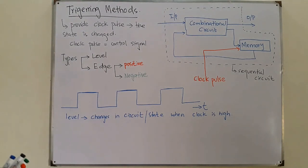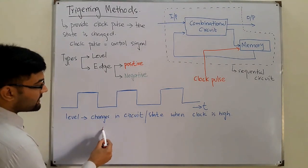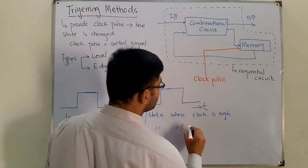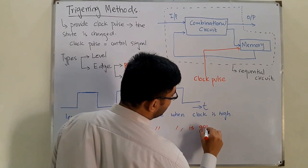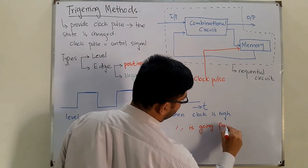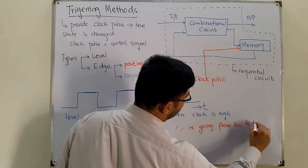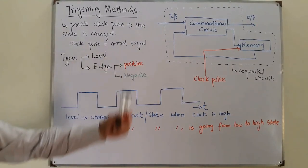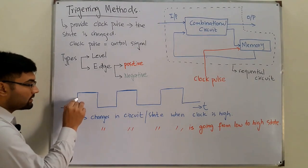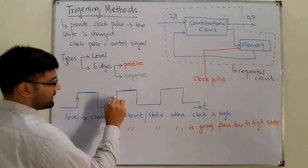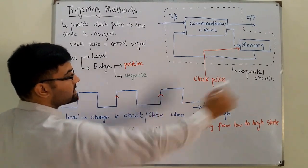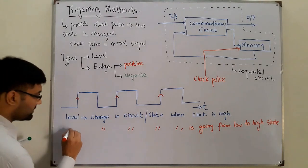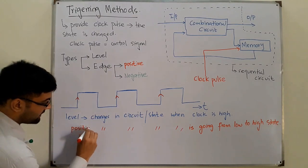For positive edge triggering, changes in the circuit or state will occur when the clock is going from a low to a high state. This is when the changes occur — the state is triggered when the clock transitions from low to high, and similarly at each such transition.